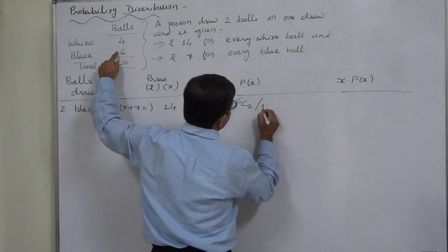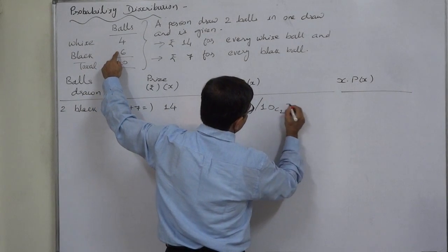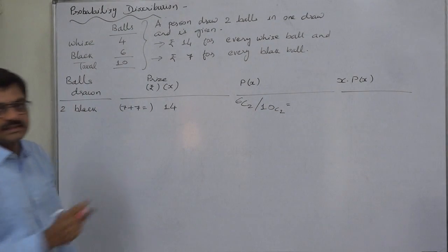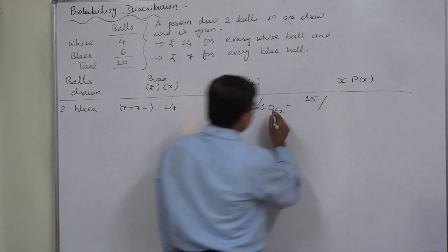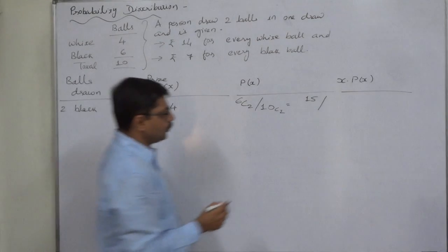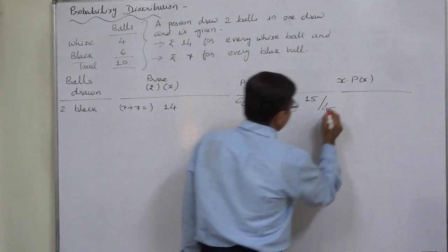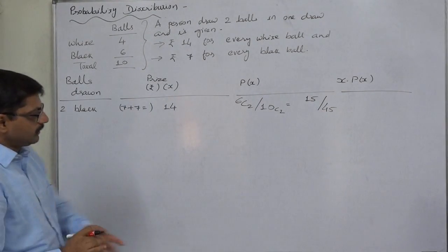So it will be 6C2 by 10C2. 6C2 is 6 into 5, 30 by 2 means 15, and 10C2 is 10 into 9 by 2, which is 45. It is 1 by 3, but I never simplify this.